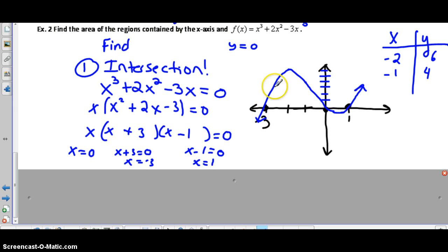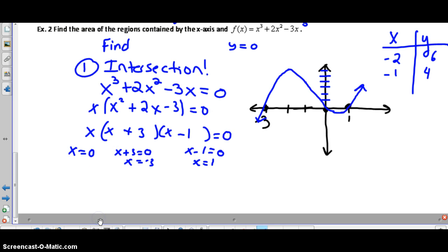That should help you determine which function we're going to be subtracting from the other. In this section we'll be subtracting our cubic function from our y = 0, and in this section we'll be subtracting our y = 0 from our cubic. So there will be two sections here for our antiderivative to find the area.